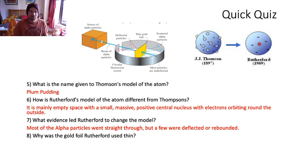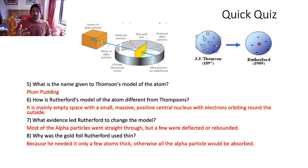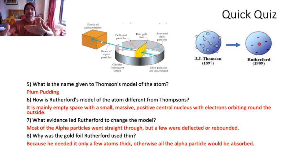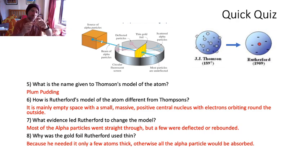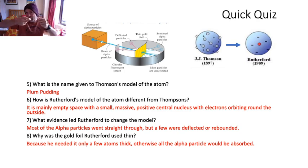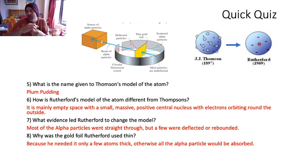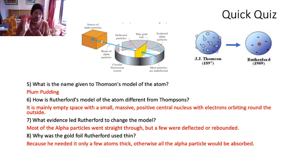What led him to that? When he fired those alpha particles, by far the commonest result was they went straight through - so it's mainly empty space. Just a few were deflected or rebounded - those were the ones interacting with the nucleus. Why was the gold foil thin? Because if you fire alpha particles at a lump of gold they'll all get absorbed - statistically the particle is bound to hit a nucleus eventually if it's going through millions of atoms. He needed it really thin so he was looking at one or two atoms thick.